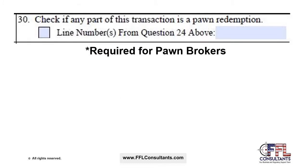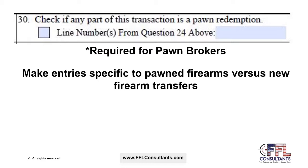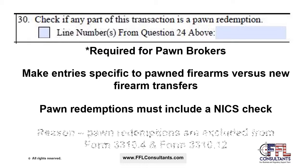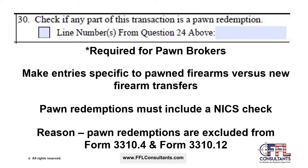If you are a pawnbroker, pay special attention to Box 30. Make entries specific to pawn firearms versus new firearms transfers. If a firearm being transferred is related to a pawn redemption, check this box and indicate which line in Box 24 relates to the firearm being redeemed. Pawn redemptions must include a NICS background check. Indicating pawn redemptions is important because they are excluded from the Form 3310.4 and Form 3310.12 multiple-transfer reporting requirements.